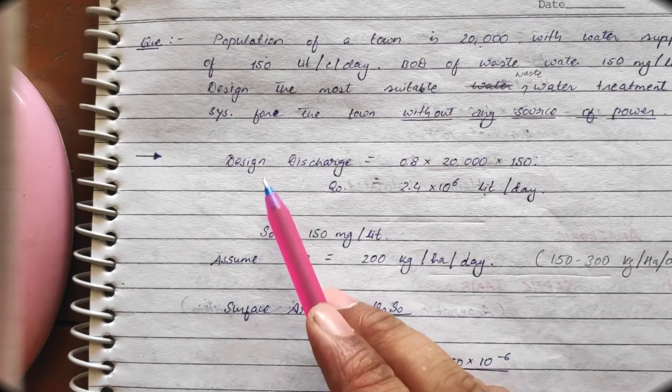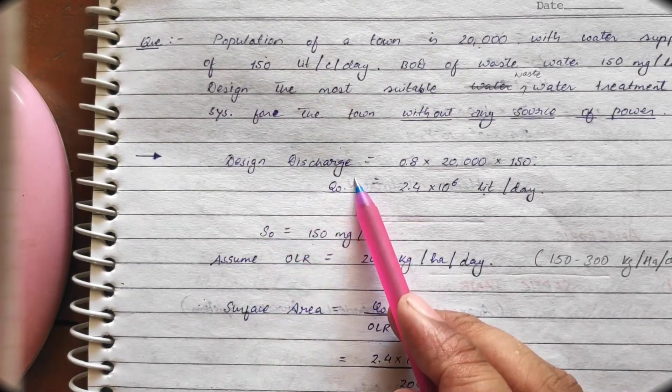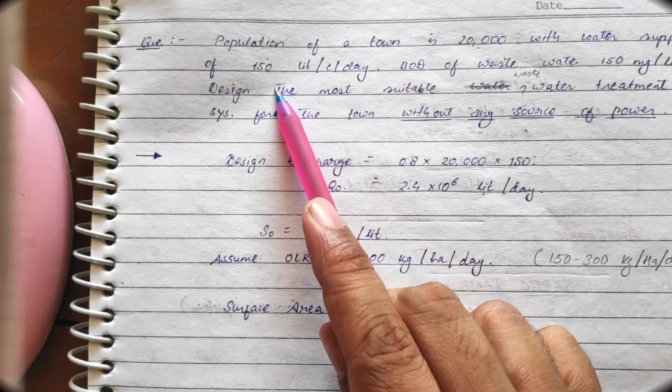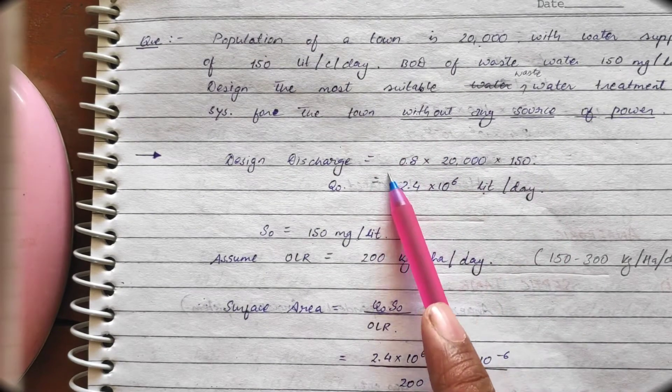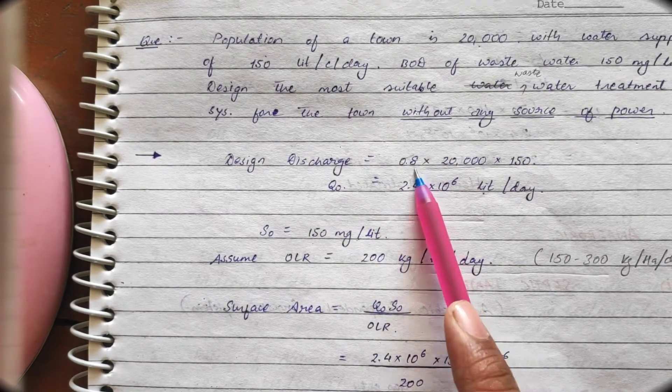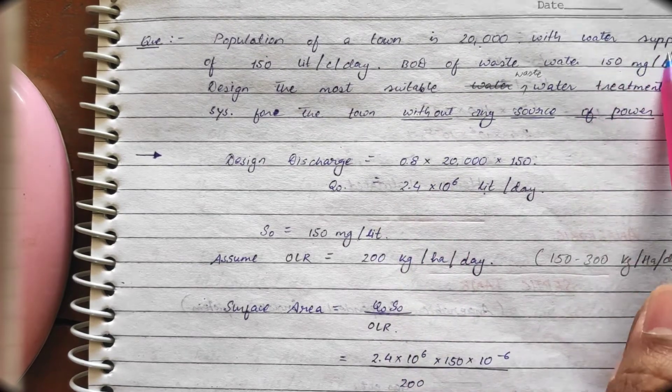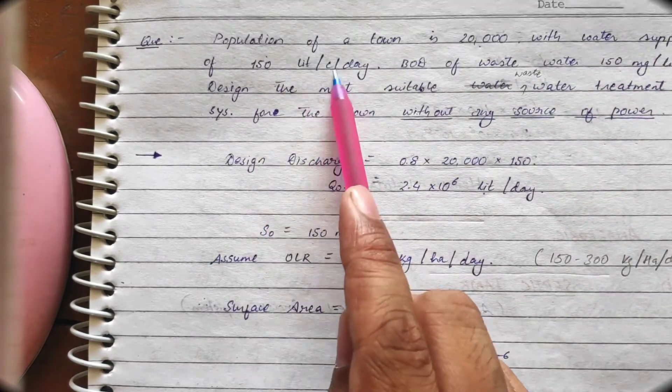First we calculate the design discharge. How to calculate the design discharge? Population is given and water supply is given. So, population multiplied by water supply multiplied by 80%. Now, why we have considered this 80%? Because we have given the water supply. How much? 150 liters per capita per day.